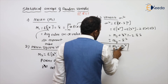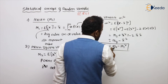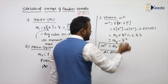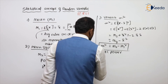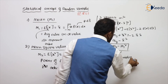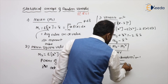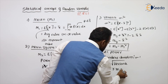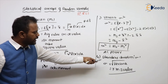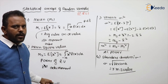So m2 is total power, m1 squared is the DC value squared, which is DC power. Total power minus DC power gives the remaining AC power — so variance is called the AC power of a random variable. Standard deviation, sigma, is nothing but the square root of variance, which is the RMS value of the AC component. To summarize: DC value is called mean, total power is called mean square value, AC power is called variance, and RMS value of the AC component is called standard deviation.